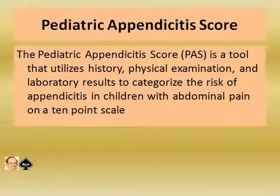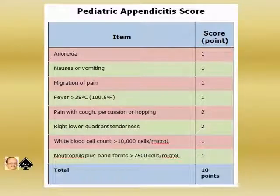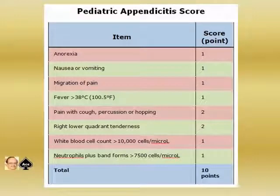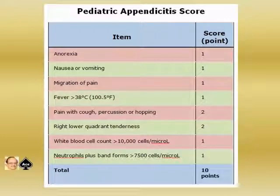The Pediatric Appendicitis Score (PAS) is a tool that utilizes history, physical examination, and laboratory results to categorize the risk of appendicitis in children with abdominal pain on a 10-point scale. The items scored 1 point each are: anorexia, nausea/vomiting, migration of pain, fever more than 38°C (100.5°F), and WBC count more than 10,000 cells/mm³, and neutrophil plus band cells more than 7,500 cells/mm³. Pain with cough, percussion or hopping, and right lower quadrant tenderness are each given 2 points, making a total of 10 points.